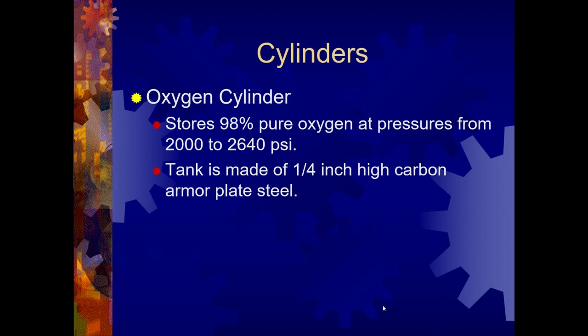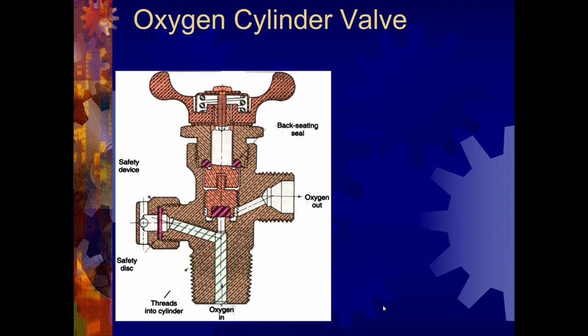When we look at the oxygen cylinder, it's important for you to know that these are pressurized cylinders. That makes them a little bit more dangerous but also makes them highly effective. In the oxygen cylinder we're storing 98% oxygen. The pressure lingers somewhere in the 2000 psi. It's a tank that's made out of quarter inch high carbon armor plate steel. In the last few years we've actually had a little bit of a hard time getting more cylinders — there's been a little bit of a shortage just because of workplace shortages in making them. They have to be made in a very particular way to ensure safety.